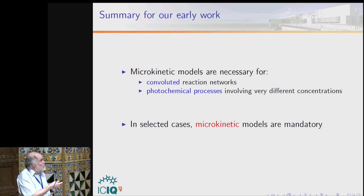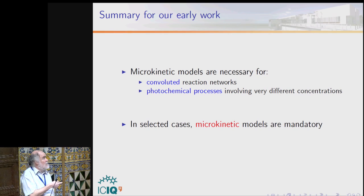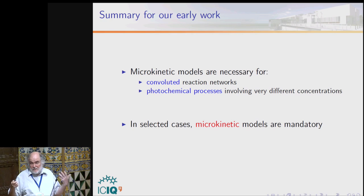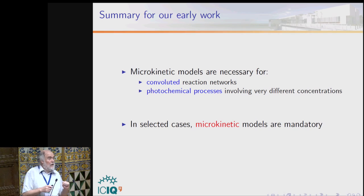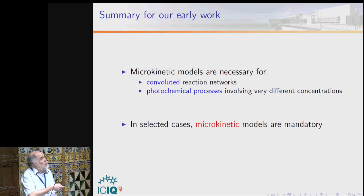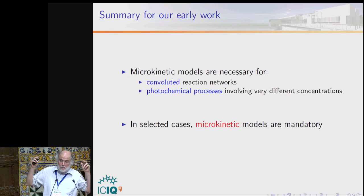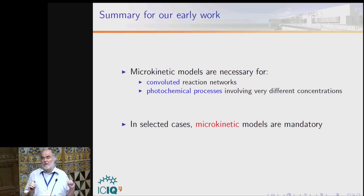Summary of the first part: microkinetic models are necessary for convoluted reaction networks like host-guest catalysis, and for photochemical processes where concentrations are very different. But what we want to show is that also in more conventional cases in homogeneous catalysis, they are also necessary.